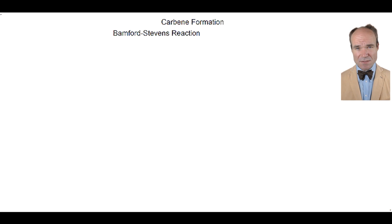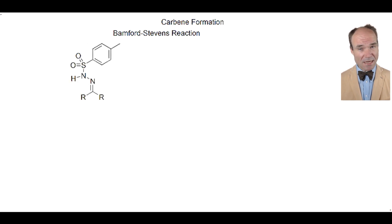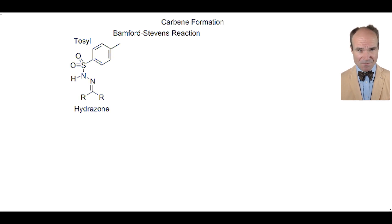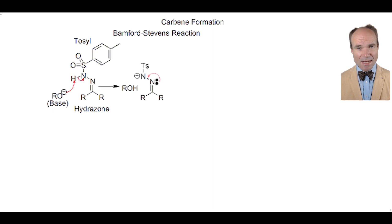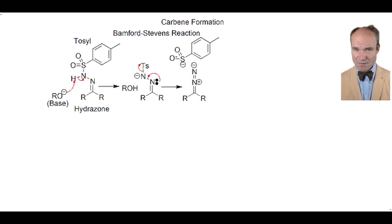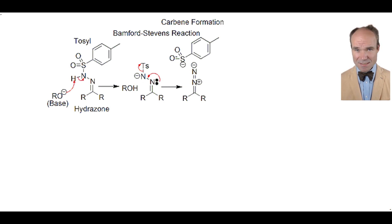The Bamford-Stevens reaction can start with a molecule made up of a tosyl group and a hydrazone group — so, a tosyl hydrazone. A base deprotonates the tosyl hydrazone to give the diazo compound and the loss of the tosyl anion leaving group. This is a great leaving group as the anion is stabilized through resonance and the charges spread across the molecule.